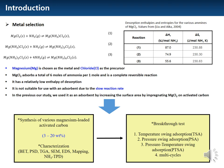However, magnesium chloride is not suitable for use as an adsorbent due to the slow reaction rate. Therefore, in the previous study, we used it as an adsorbent by increasing the surface area by impregnating magnesium chloride on activated carbon. In this study, the optimal magnesium-loaded amount for ammonia adsorption was selected and the optimal process was selected among the TSA, PSA, and PTSA processes. Multi-cycles were also performed.